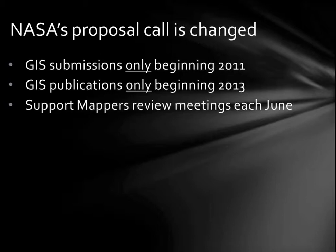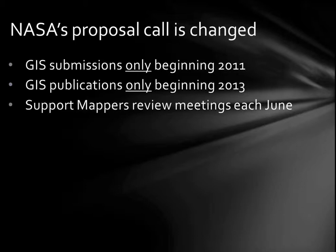In 2011 the NASA geologic proposal call was changed so that every single geologic map funded by NASA has to be done in a GIS — not necessarily ArcMap, but it has to be done in a GIS and submitted to us in GIS format. In 2013, we will only publish GIS files. That still means we'll print posters, but along with the map you hang on your wall, we'll also publish the GIS files. You'll see the latest maps from Ganymede, Io, Mars, and Tooting Crater — all the GIS files are out there in a hopefully consistent form.